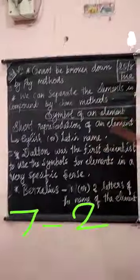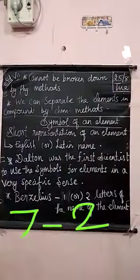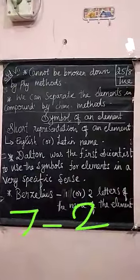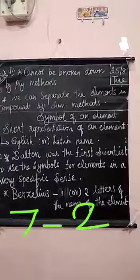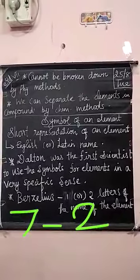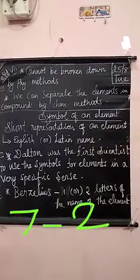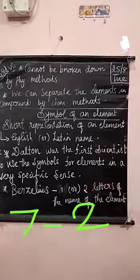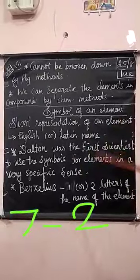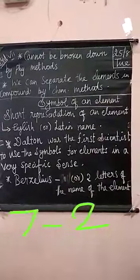A symbol is a short representation of an element. The symbol is usually derived from its English name or its Latin name. These symbols are allocated by the IUPAC — that is, the International Union of Pure and Applied Chemistry.